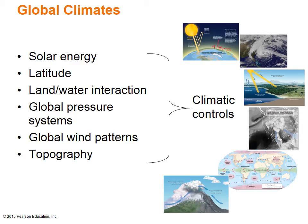Most human activities are closely linked to weather and climate. Humans need the right temperature and moisture to grow crops for foods and other products. Much of the world's landscape diversity results from ways in which people adapt to weather and climate. This adaptation will continue as climate and weather continues to change through processes such as global warming. The world's climates differ from place to place as they are influenced by these climate controls: solar energy, latitude, land and water interaction, global pressure systems, global wind patterns, and topography.